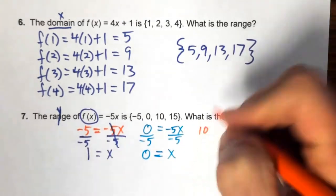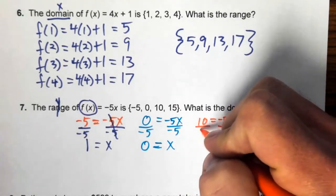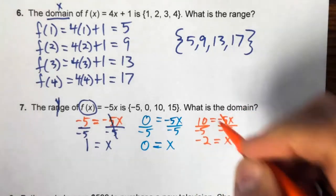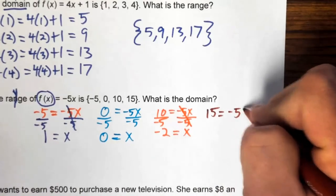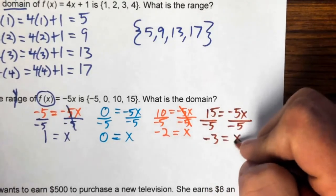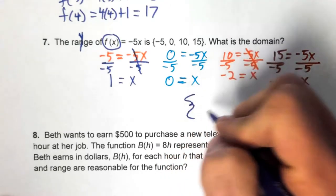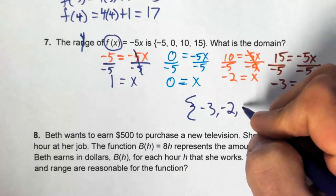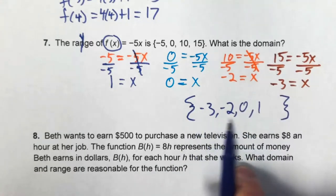Continuing: for 10 = -5x, divide by -5 to get x = -2. For 15 = -5x, divide by -5 to get x = -3. Writing these in numerical order, the domain is {-3, -2, 0, 1}. It's okay to write the members in numerical order rather than the order we found them.